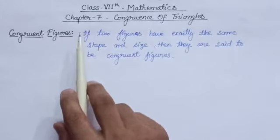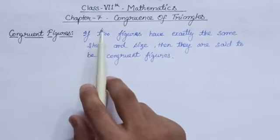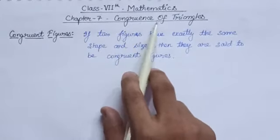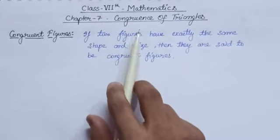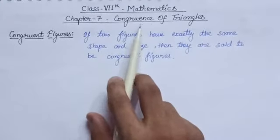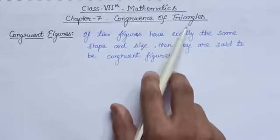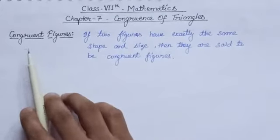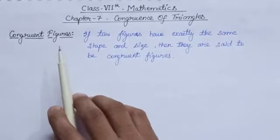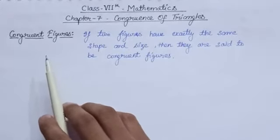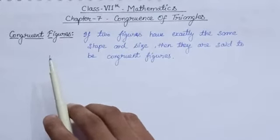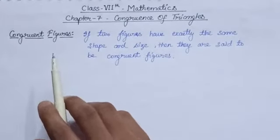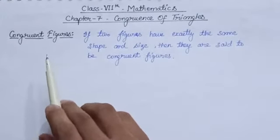Hello students, today we are going to start our next chapter, congruence of triangles. This is the first part of congruence of triangles, in which we will study about what are the congruent figures and some types of congruent figures. After that, we will solve exercise 7.1.